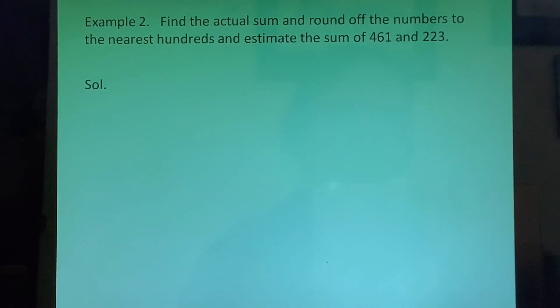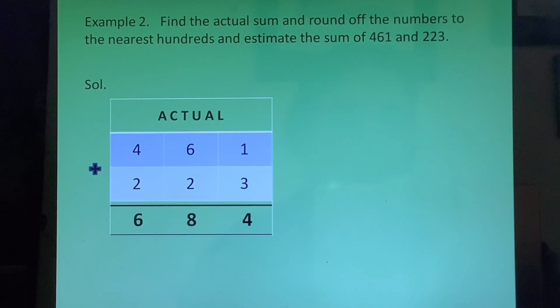Now example 2. I have taken the same numbers but there is a difference in the example. Let us read. Find the actual sum and round off the numbers to the nearest hundreds and estimate the sum of 461 and 223. For this we have to first find the actual sum. So we will write the numbers one below the other and add them. So when we add we will get the answer as 684.